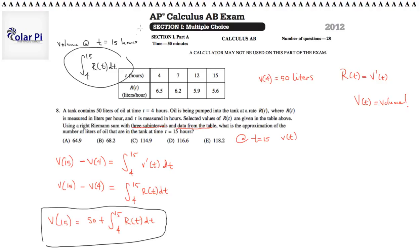So, since we want the volume of oil at 15, we must take the change in volume from time t equals 4 to 15 and add on to this however much we started off with at t equals 4 hours. So, what we came in with before we got to t equals 4 hours and that was 50 liters.